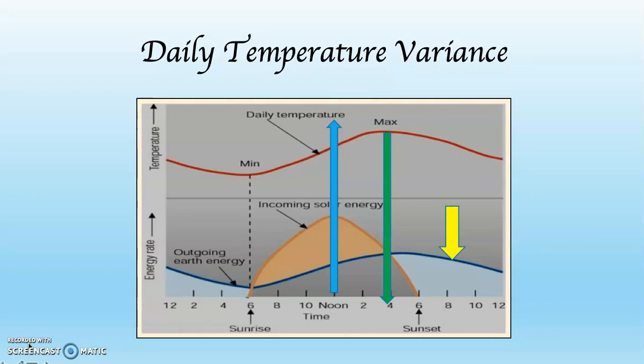Now if you look at that yellow arrow, you can see it's pointing at the blue line. The blue line represents outgoing Earth energy, in other words, long wave radiation. Here I've highlighted it. Notice that outgoing Earth energy reaches its peak about the time that we have maximum temperature.